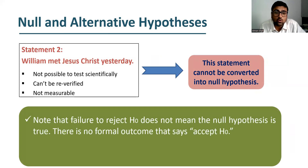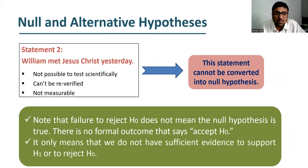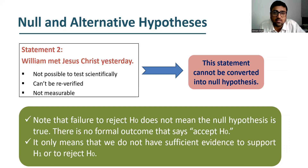Now, if you fail to reject the null hypothesis, that does not mean that null hypothesis is true. There is no formal outcome that says 'accept H0.' We always say we fail to reject H0. It only means that we do not have sufficient evidence to support our alternative hypothesis or to reject our null hypothesis, and therefore we fail to reject the null hypothesis.